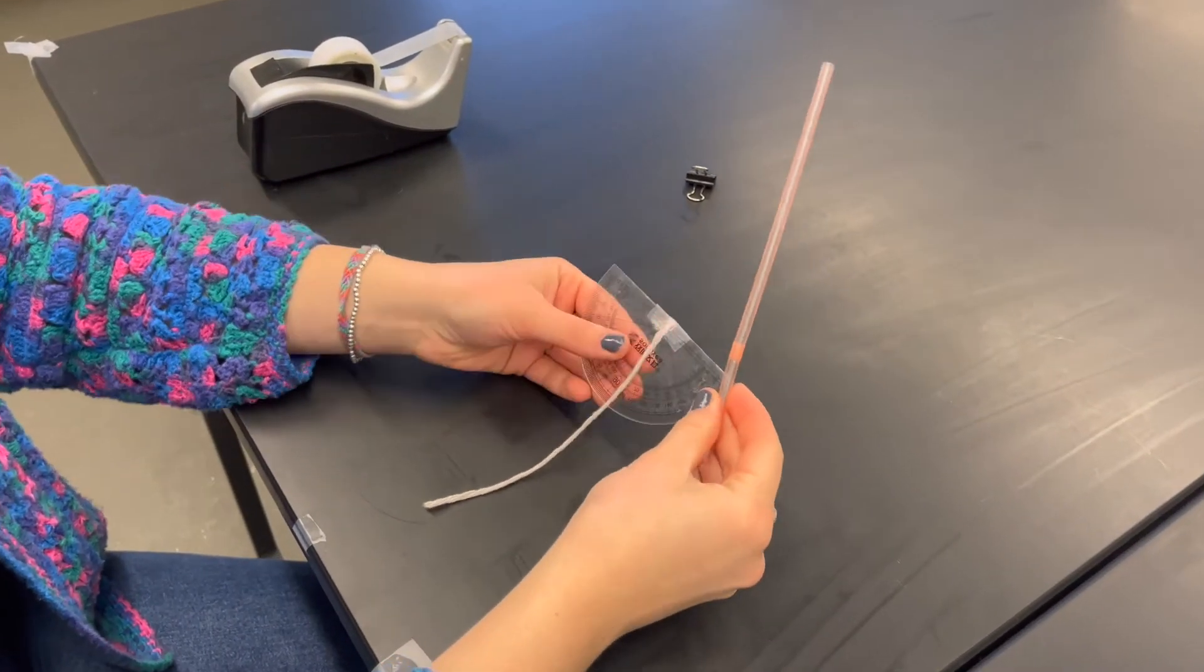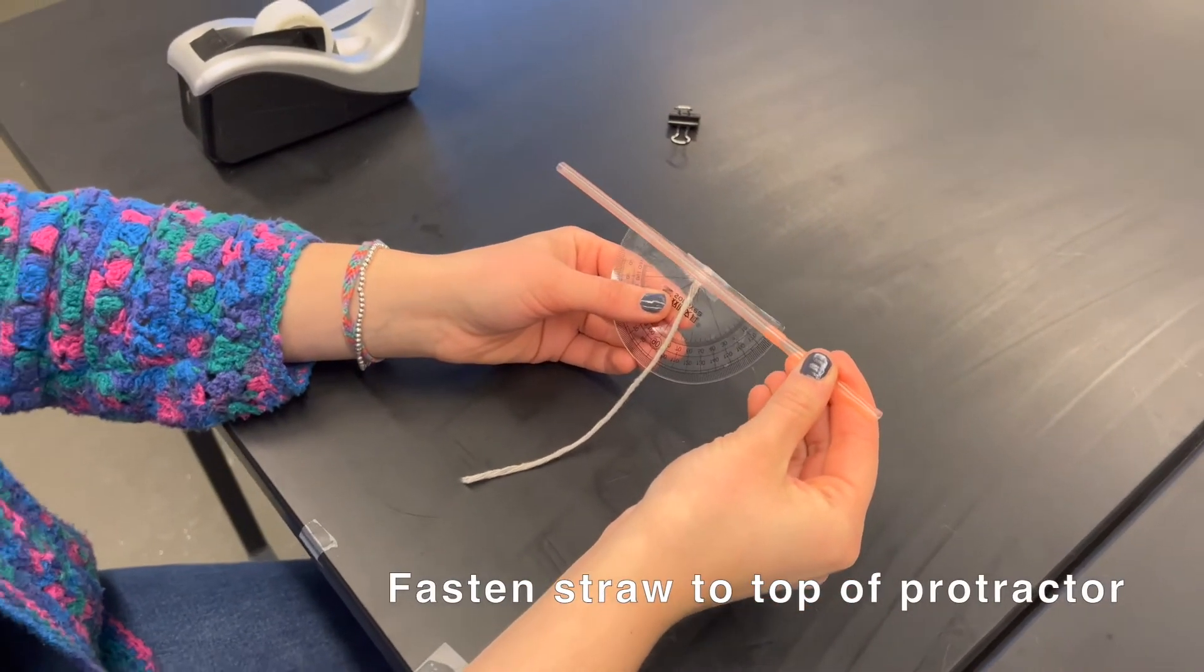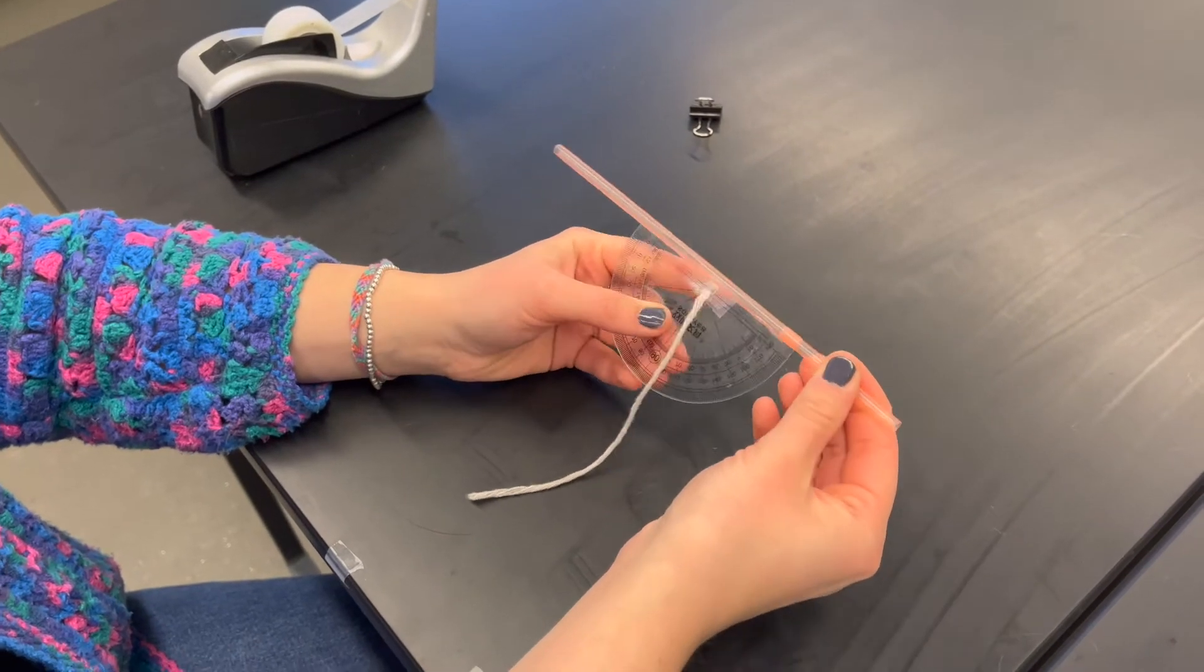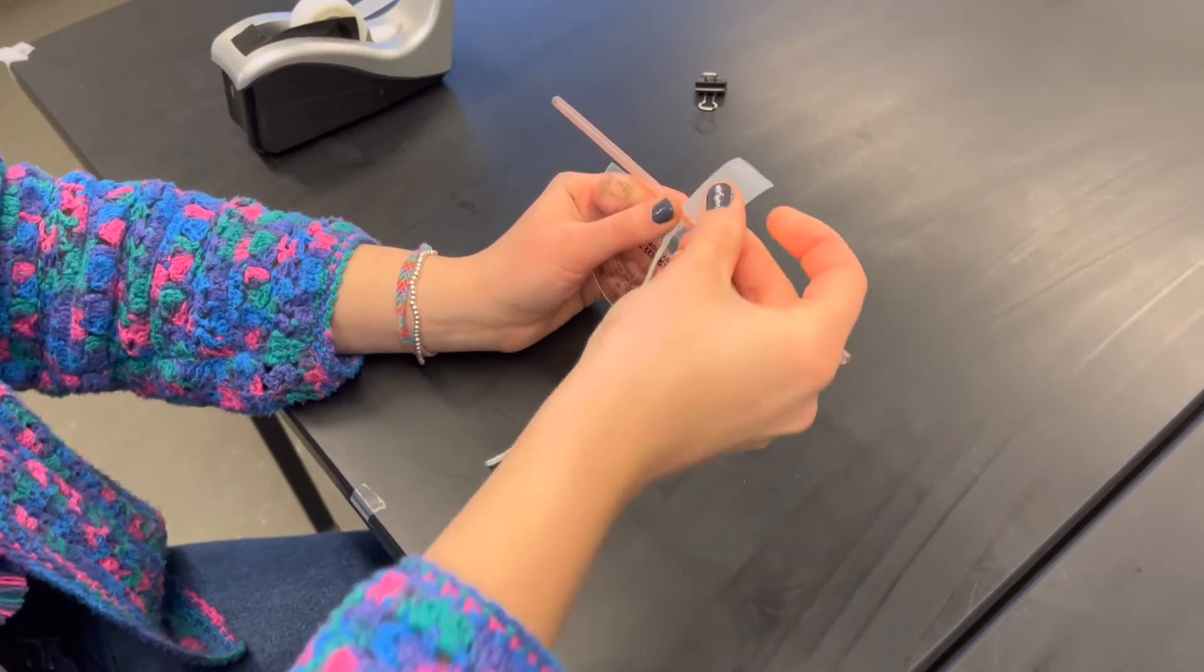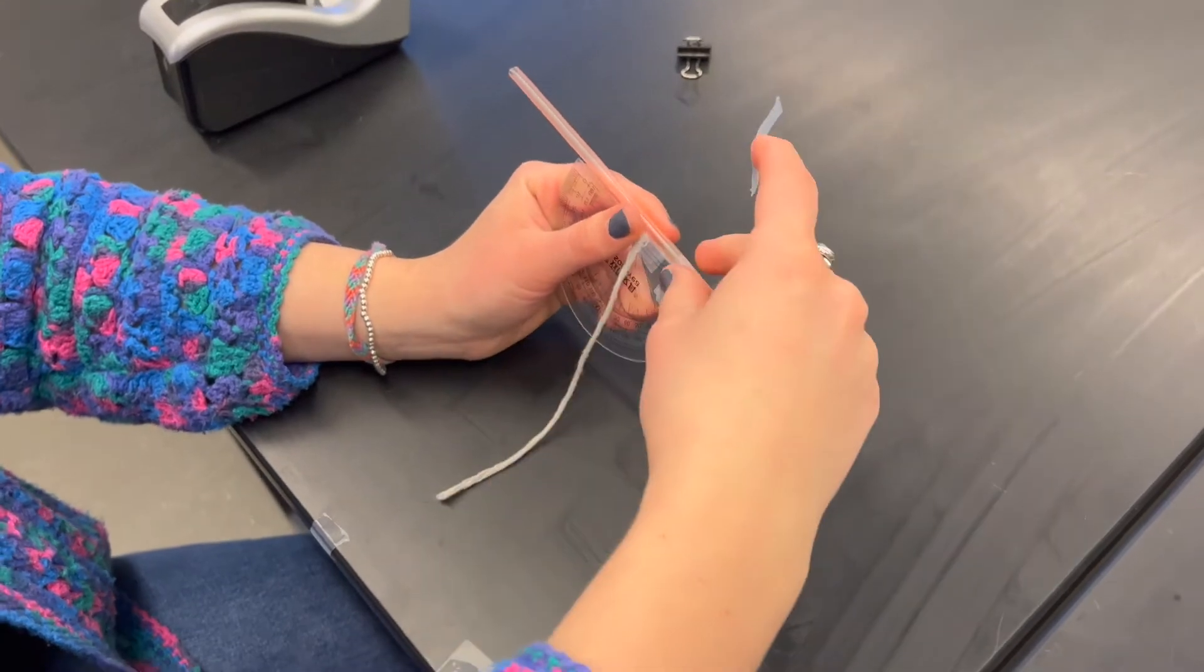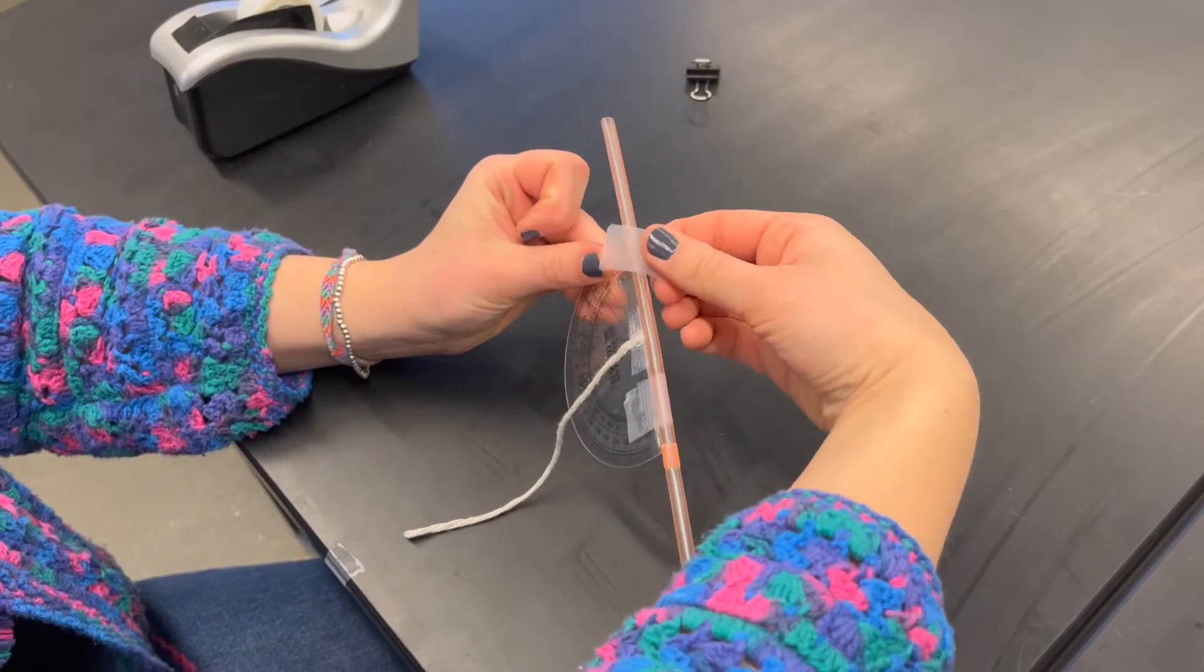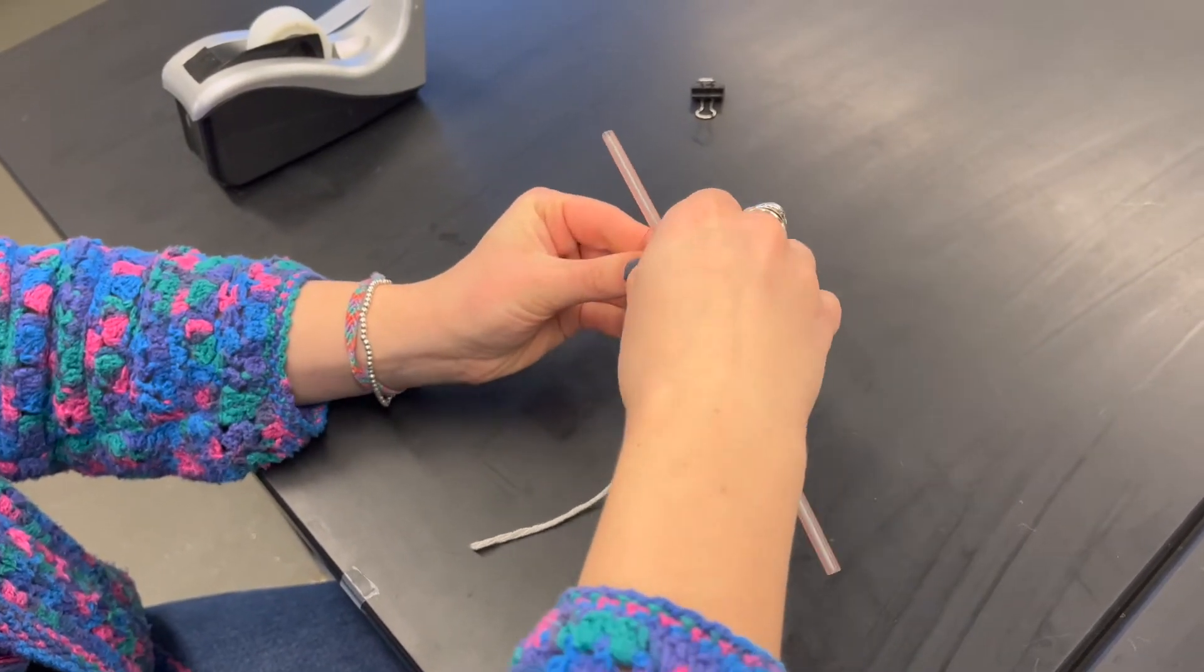So the next step is fastening our straw to the top of our protractor. And you want to keep in mind you don't want to do it on the flat side, you want to do it right on that ridge on top. So using some of our tape we want to secure our straw into place. And we're using two pieces of tape today or you can use as many as you need to make sure that that straw isn't moving anywhere and it's in the middle of our protractor.